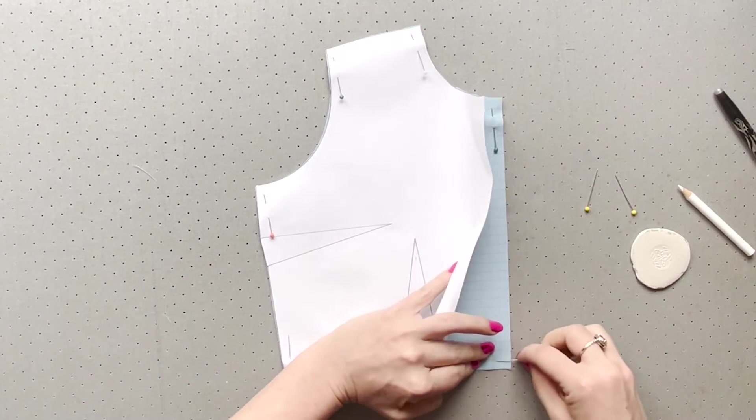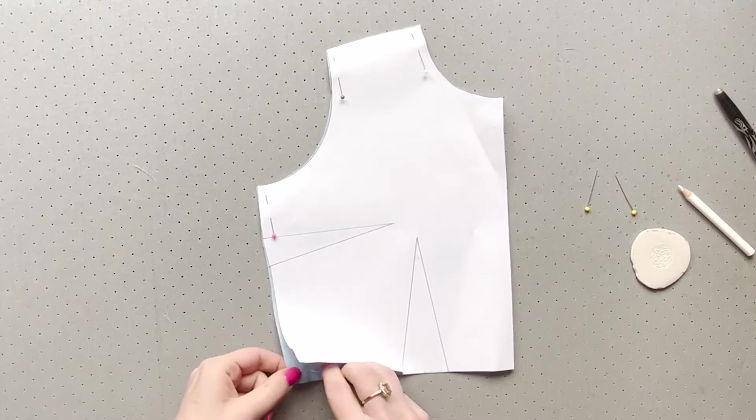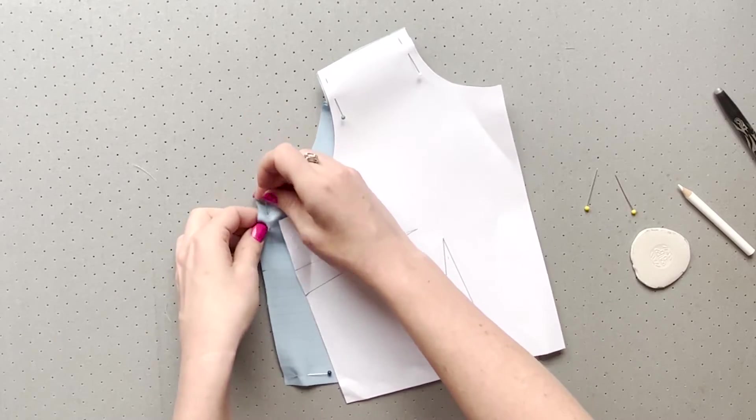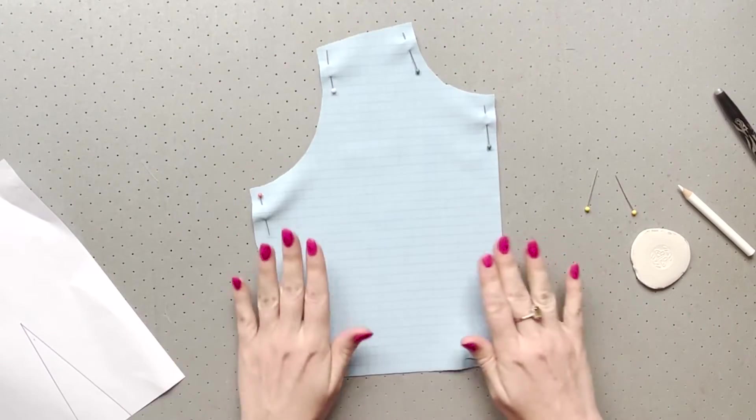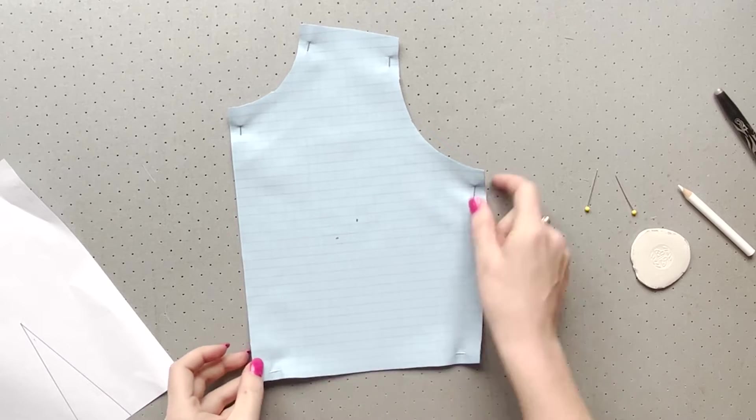Once that is done, unpin your paper a pin at a time but place your pins back in your fabric to hold it together in place. As you get better you'll probably be able to get away with less pins but the more you secure these fabrics from moving the better results you will get.